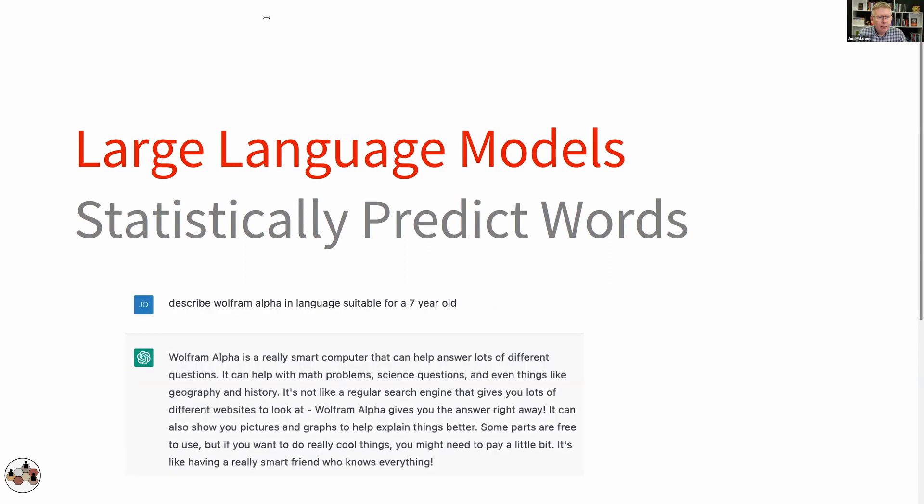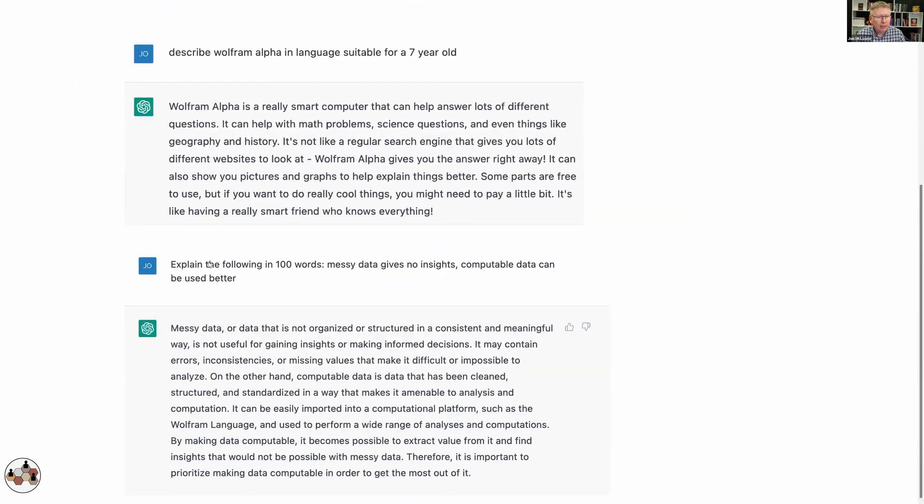I'm sure you've seen these kinds of examples that give this very fluent human-like ability to generate text. So I can give it an instruction like describe Wolfram Alpha in language suitable for a seven-year-old, and it does a really pretty good job of that. But in the end, those are the words that are likely to have followed such a request. And likewise, asking it to explain something given some prompt, this is the kind of explanation that you would expect to follow, and it's generated words that really do seem to answer that question very well.